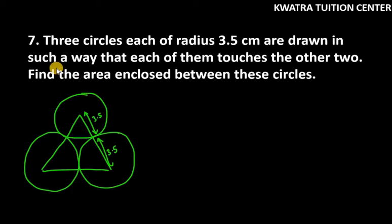Hello everyone, let's start with question number 7. Three circles each of radius 3.5 cm are drawn in such a way that each of them touches the other two.